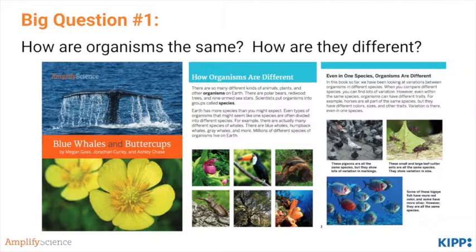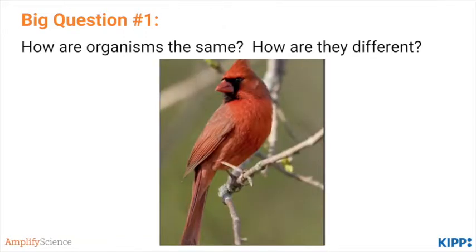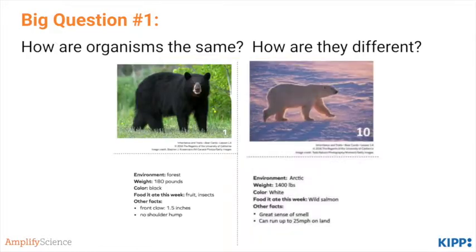After this, students look at a new book, Blue Whales and Butterclubs, once again looking at how different species are different, but then starting to zoom in into one individual species and seeing how there are differences even within a species. Lesson four is optional, in which students explore how bird songs are different across species — so not just looking at physical traits, but also looking at behavior. In lesson five, students look at both physical and behavioral characteristics of bears and try to sort them into two separate species.